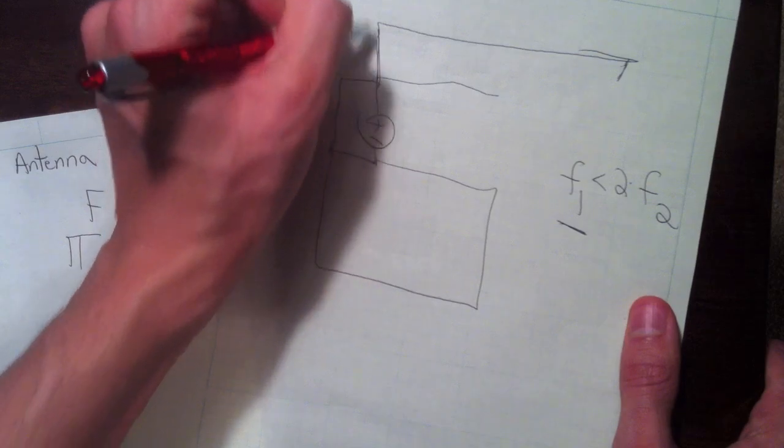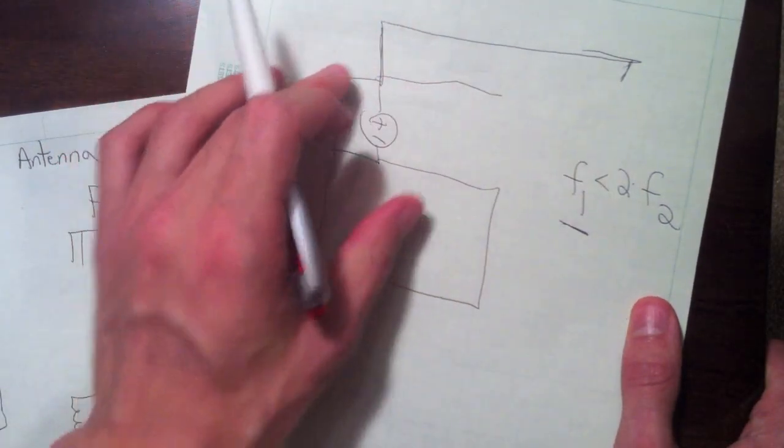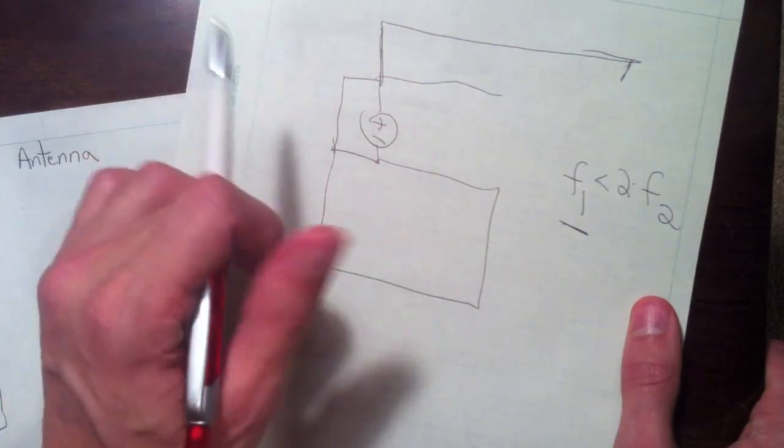This structure has the parallel inductor here in the ground plane, and it makes for a long IFA, so lower resonant frequency.